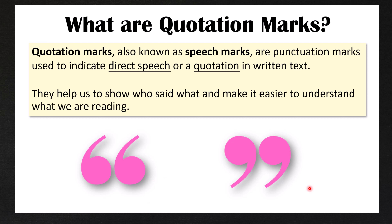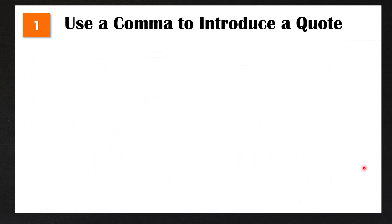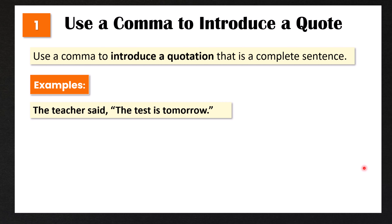Now in this lesson I am talking about how to use quotation marks in American English. So first we're going to talk about when to use a comma to introduce a quote. We use a comma to introduce a quotation that is a complete sentence. So let's look at some examples.